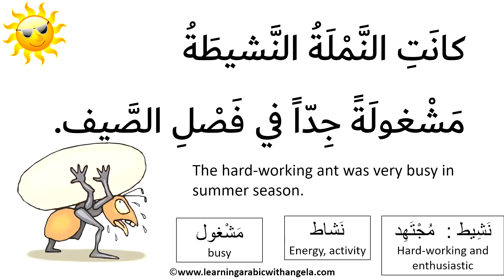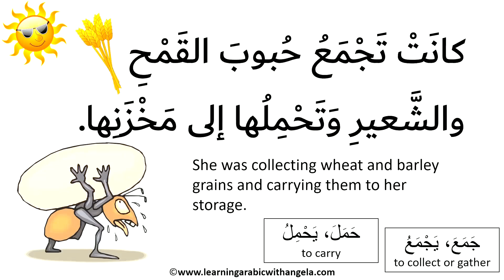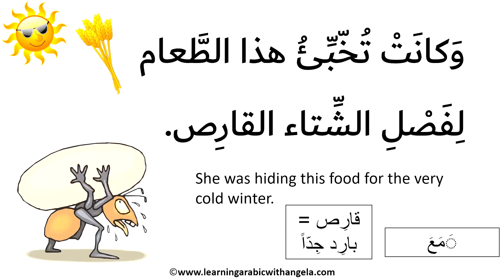كانت النملة النشيطة مشغولة جدا في فصل الصيف. كانت تجمع حبوب القمح والشعير وتحملها إلى مخزنها. وكانت تخبئ هذا الطعام لفصل الشتاء القارس. The industrious ant was very busy in the summer season, collecting wheat and barley grains and carrying them to her storage, hiding this food for the bitter cold winter.